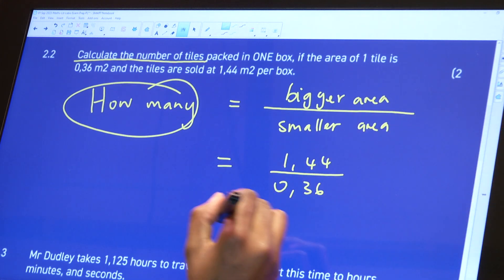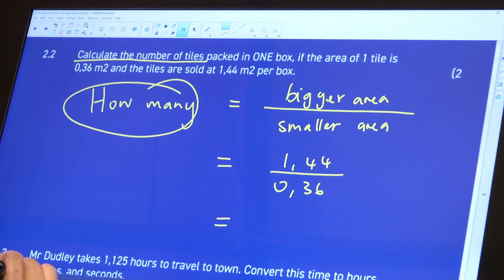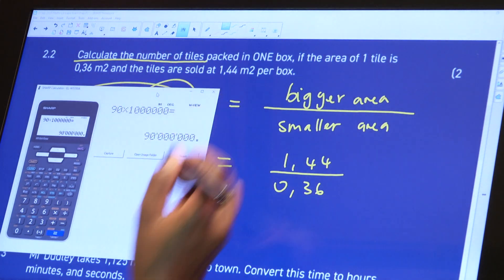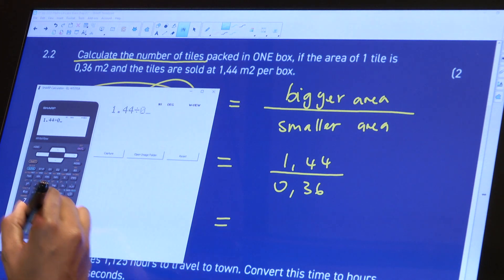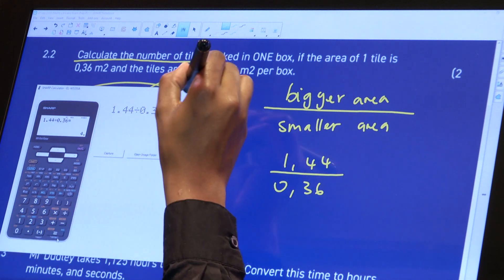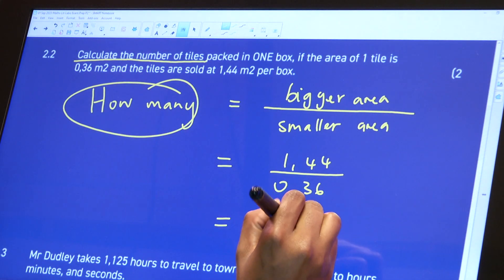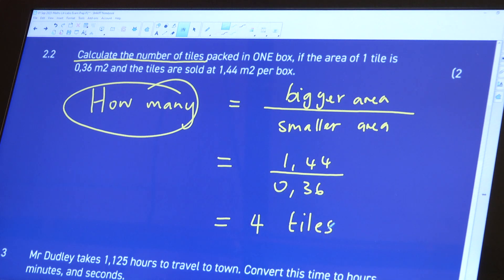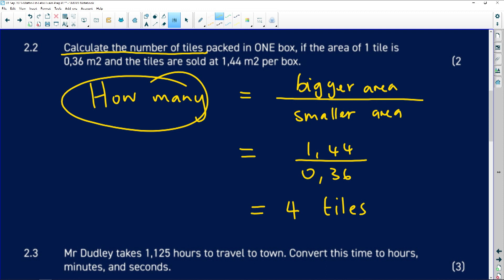And this is going to tell us how many tiles are going to be packed in a box. And there's something quite interesting that I want us to look at when it comes to such questions. So 1.44 divided by 0.36. That's 4 tiles in a box. If we had gotten a decimal number, we were going to round down. And the reason why we round down is because we cannot have half a tile in a box. Okay. So if it was 4.5, we were going to say 4 full tiles. If it was 4.3, it was going to be 4 full tiles. If it was 3.9, it was going to be 3 full tiles. So whenever we are working with whole numbers, we are either going to round up or round down. So in this case, we round down.